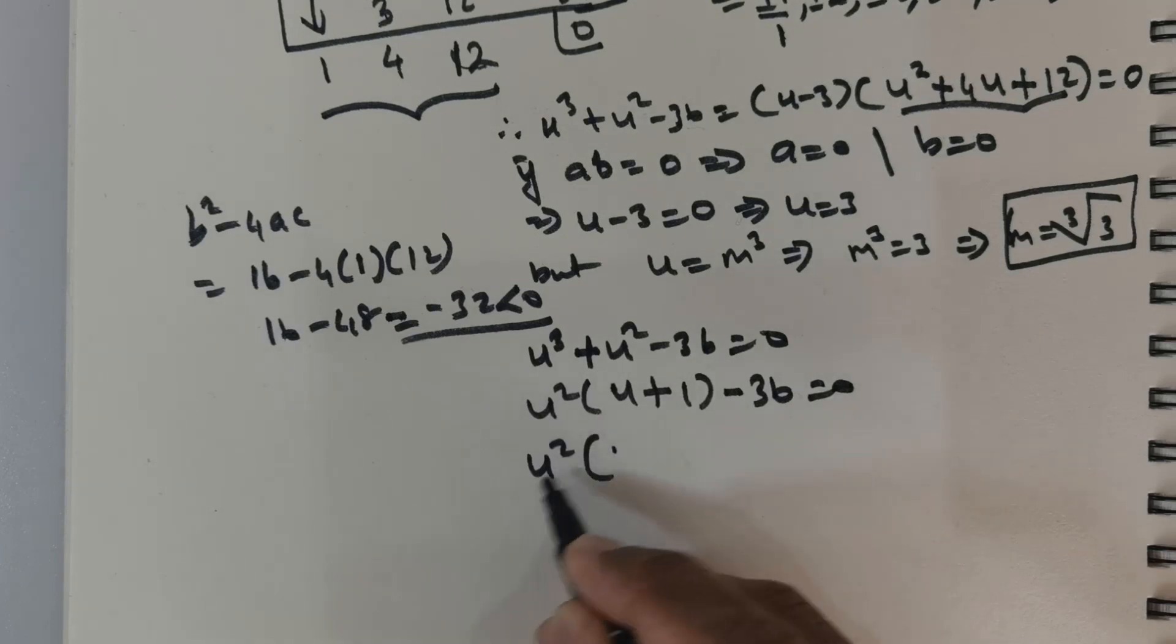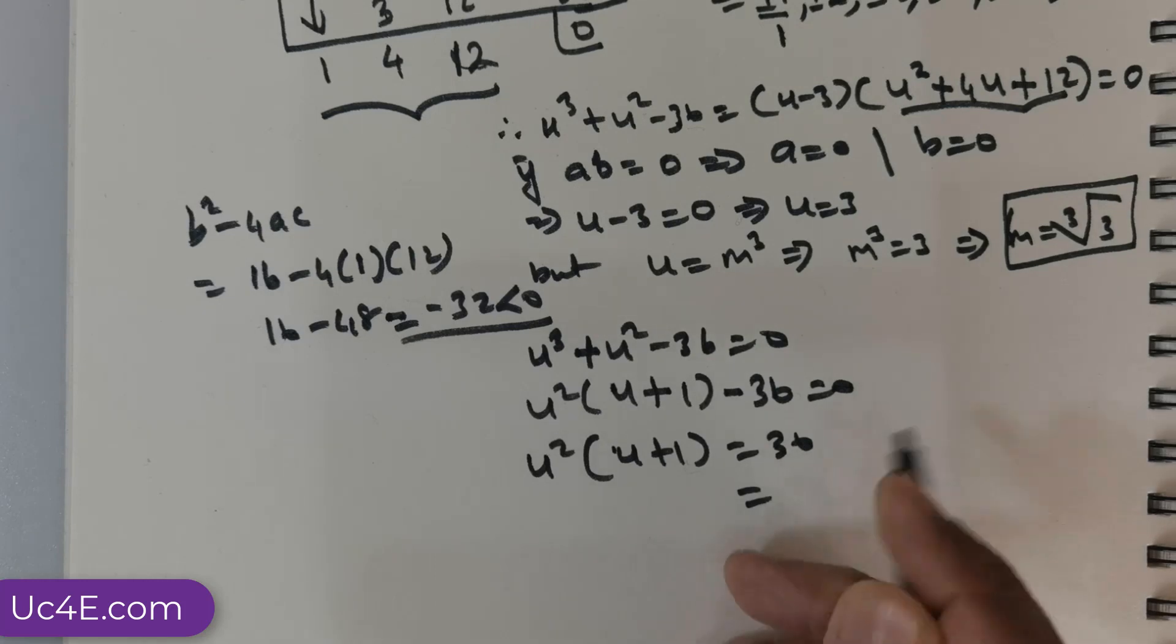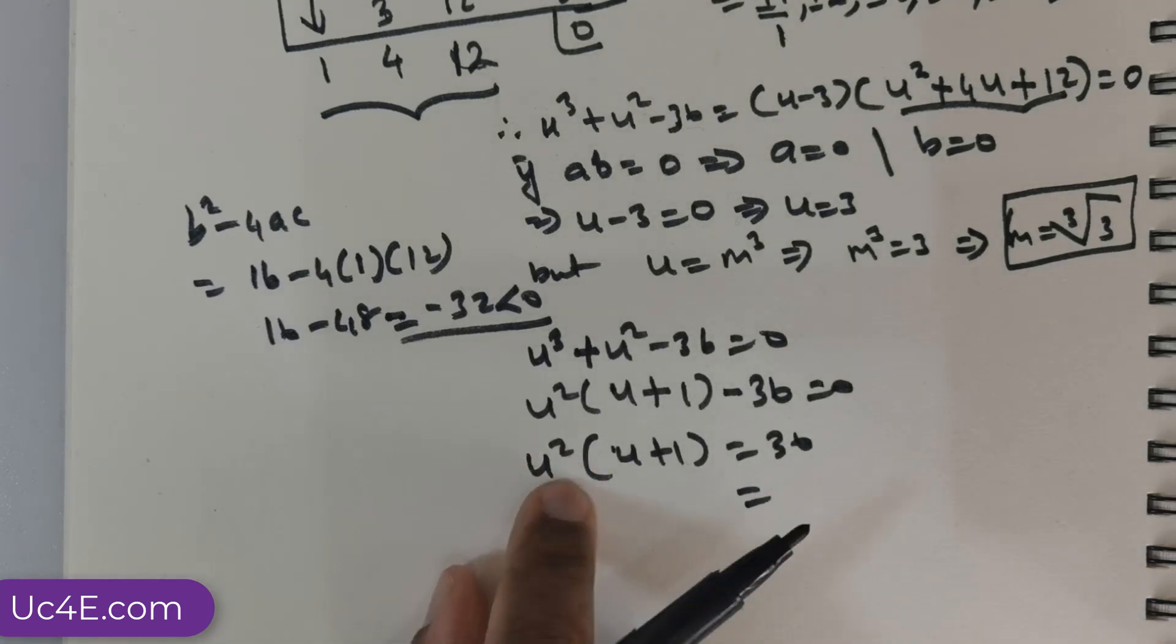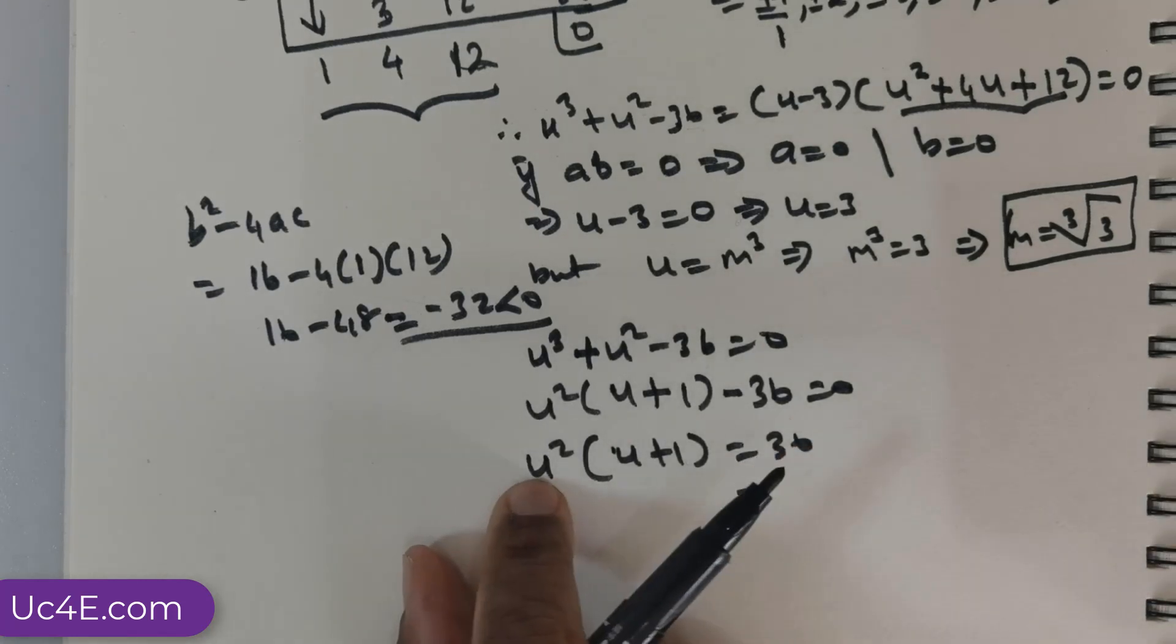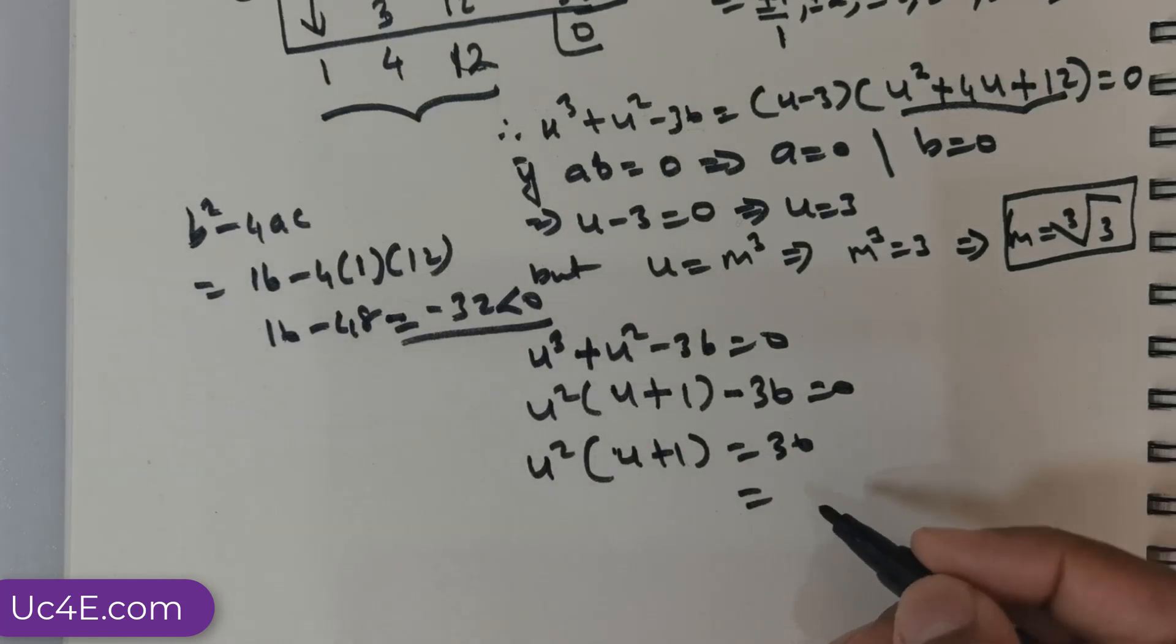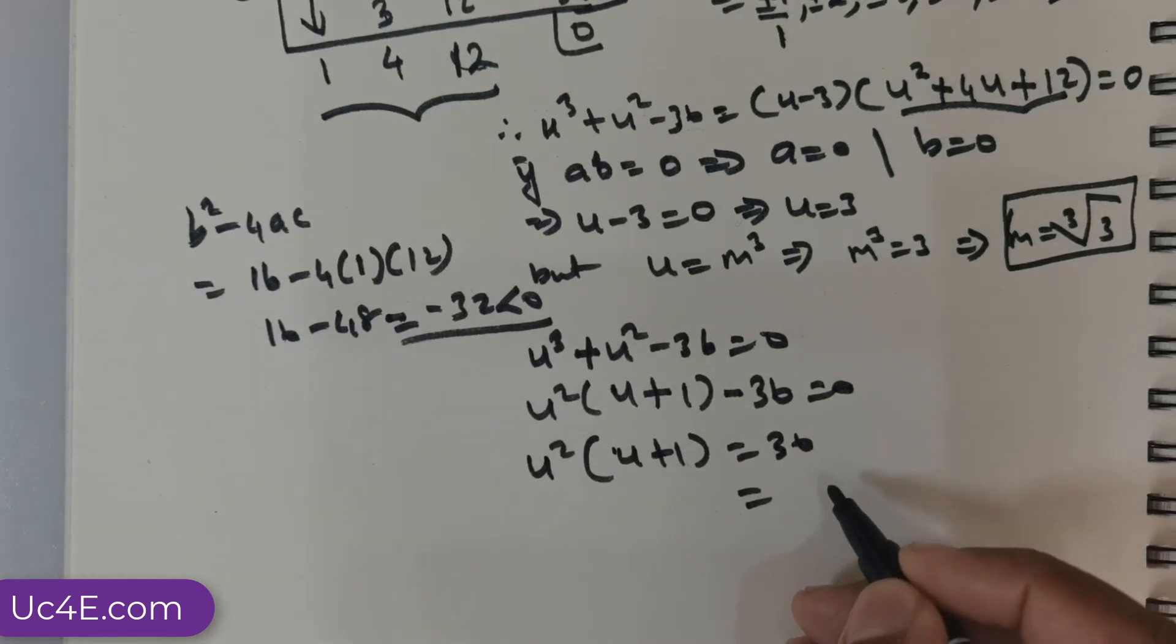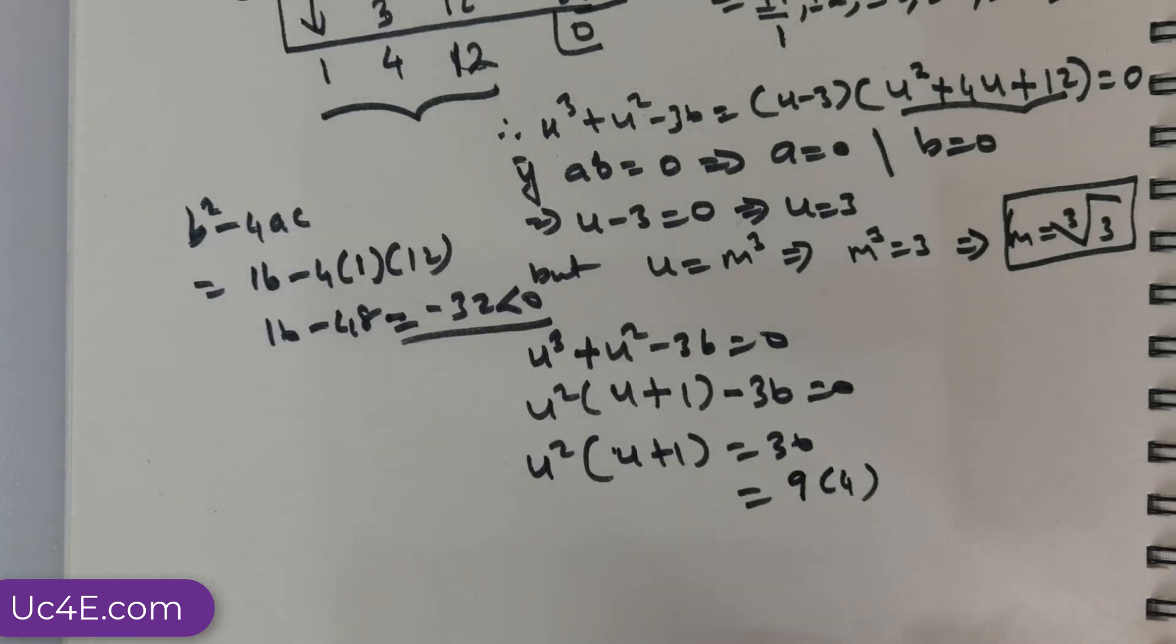Now, I have got u^2. This is a perfect square. Right? So, I want to actually split 36 so that I am having a perfect square as one of the terms. So, that is the clue. Right? So, one of the ways I can do is I can have a 9 here and a 4 here. 9 times 4 is 36.